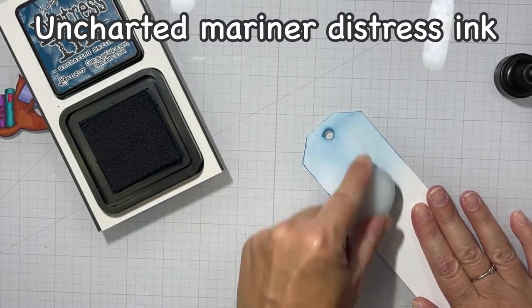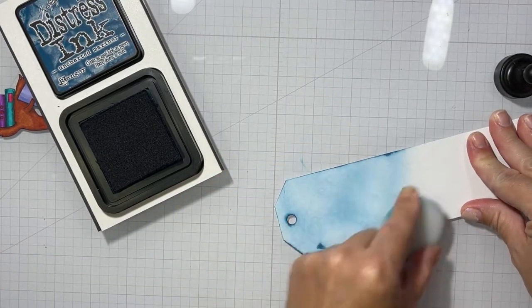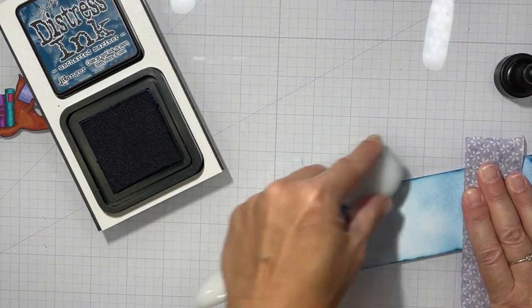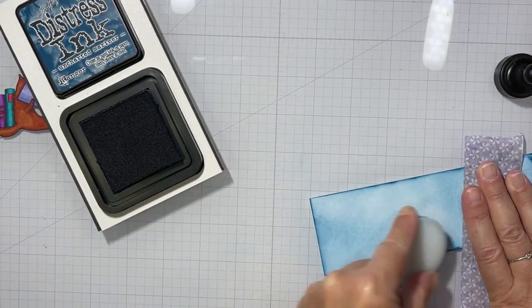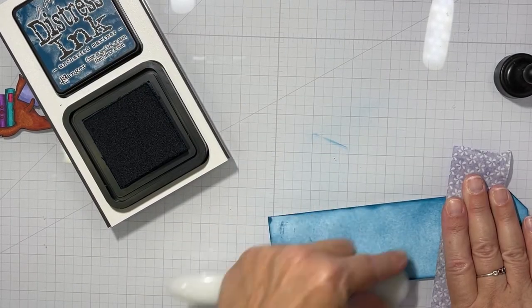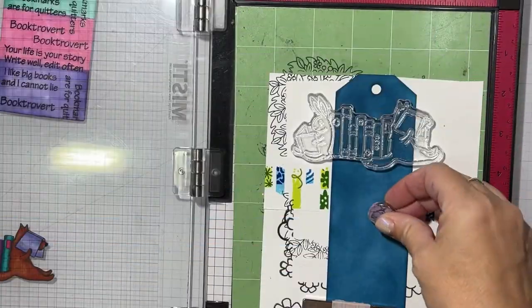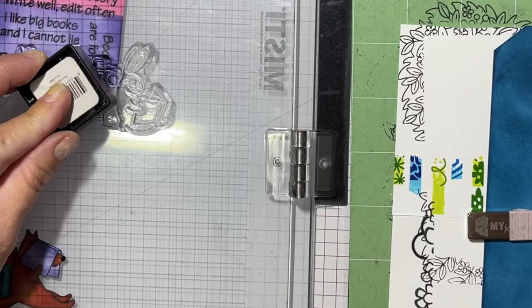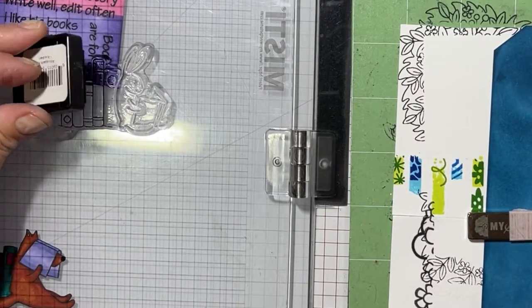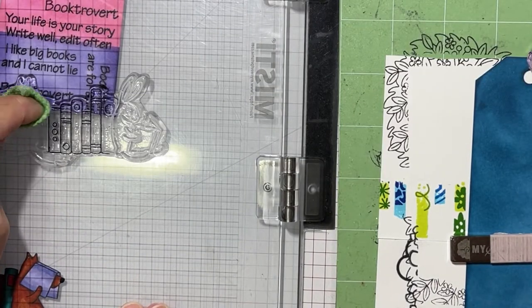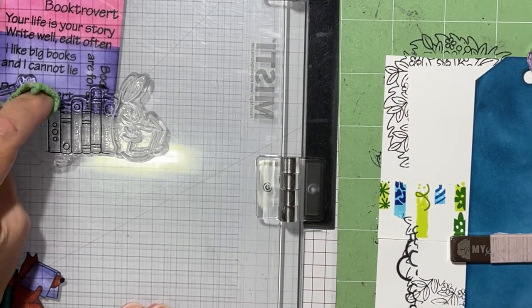And now we're moving on to the second bookmark. A little bit more ink blending. And we have the Uncharted Mariner Distress Ink. I think this is the first time I've actually gotten to use this color. And I really like it. Now, I did not show you all the ink blending, but I got that fairly saturated. I wanted it nice and dark, which I came to regret later. Now, I still like the color, but it was very difficult to continuously stamp out these books without the animals. I only wanted the books.